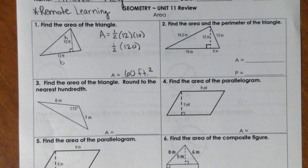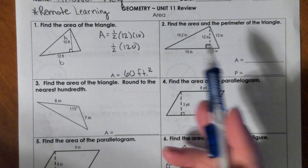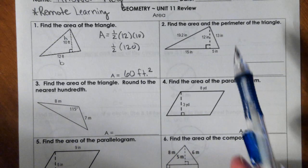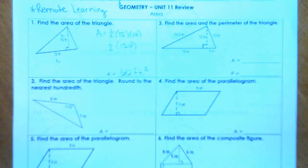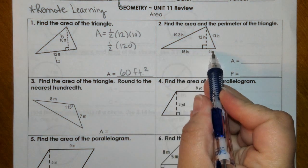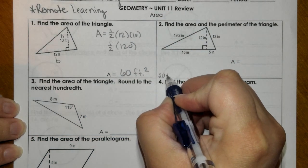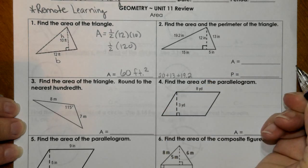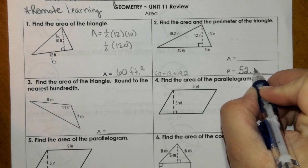Now on the test, it's usually multiple choice or multiple response. Number two, we need to find the area and the perimeter of the triangle. Perimeter should be pretty simple. We're going to add up all the sides. So 15 and 5 would be 20 plus 13 plus 19.2. If we add all those together, we would get 52.2 inches.